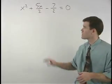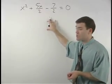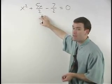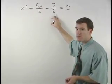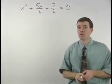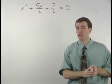When solving this equation using the quadratic formula, the temptation is for students to say that a equals one, b equals five halves, and c equals negative seven halves. This method, however, will cause some problems because you'll be dealing with a lot of fractions within the quadratic formula.